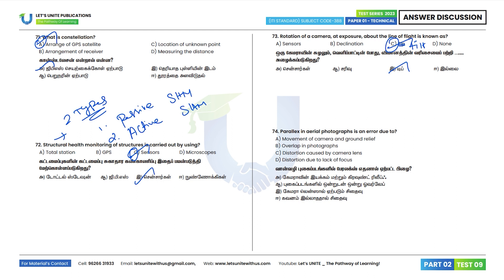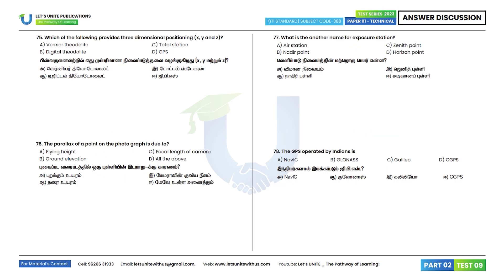Question 74: Parallax in aerial photographs is an error due to movement of the camera and ground relief. All of the above is the correct answer. Option A. Question 75: Which of the following provides three-dimensional positioning X, Y, and Z? The answer is GPS. Option B.